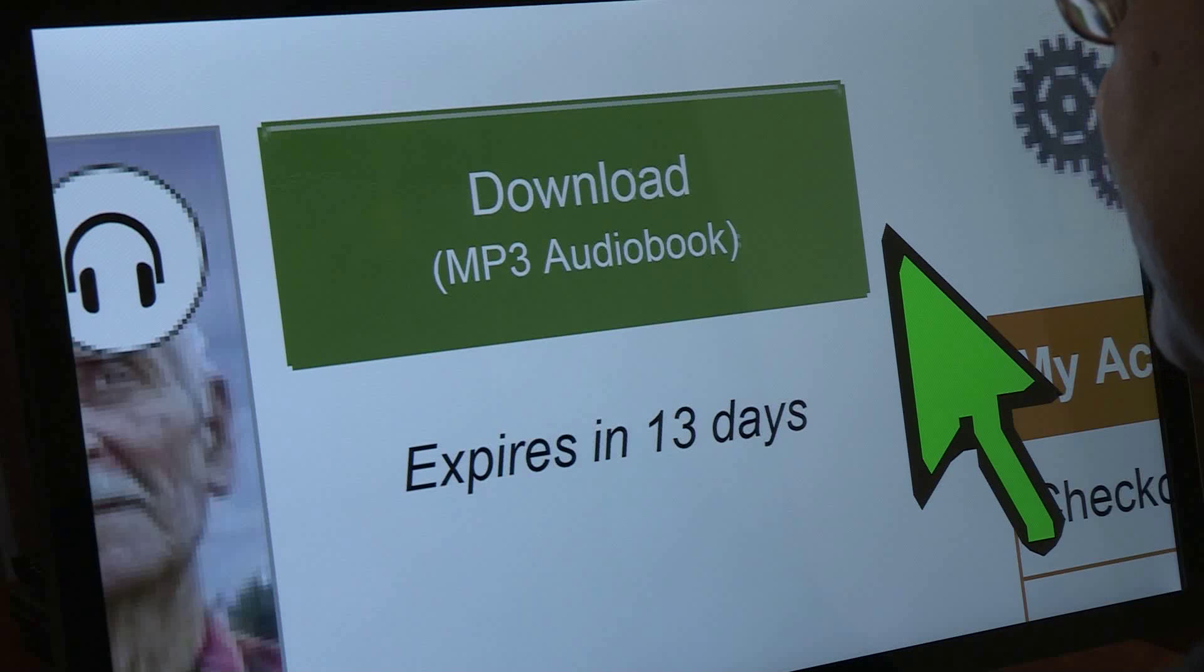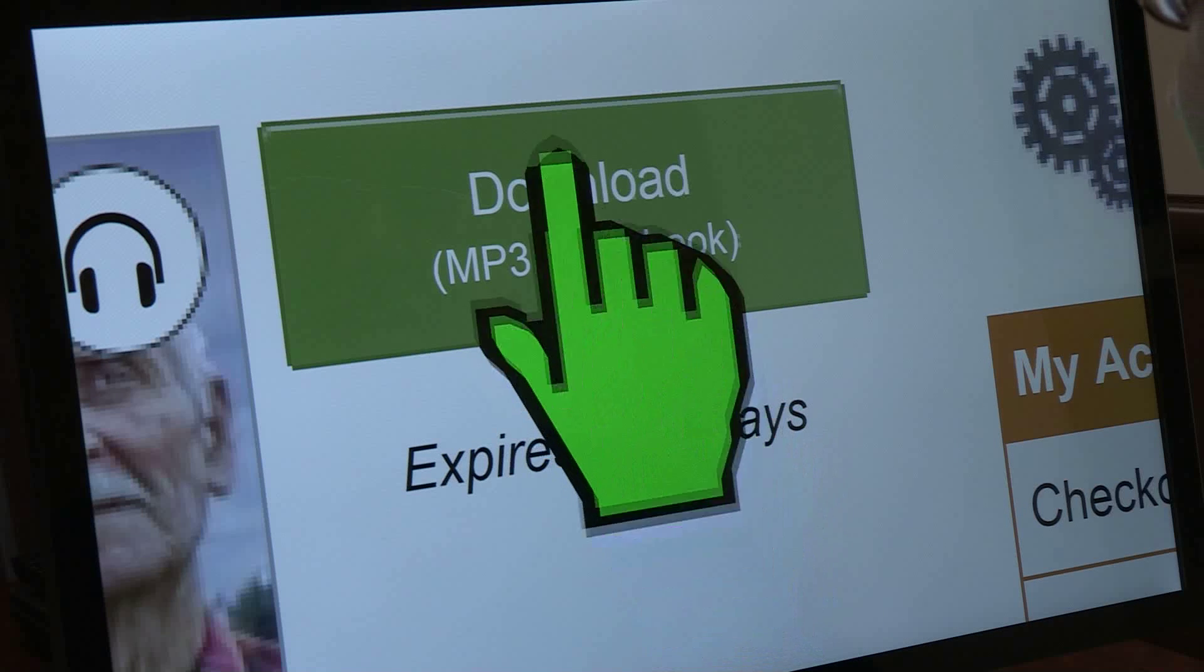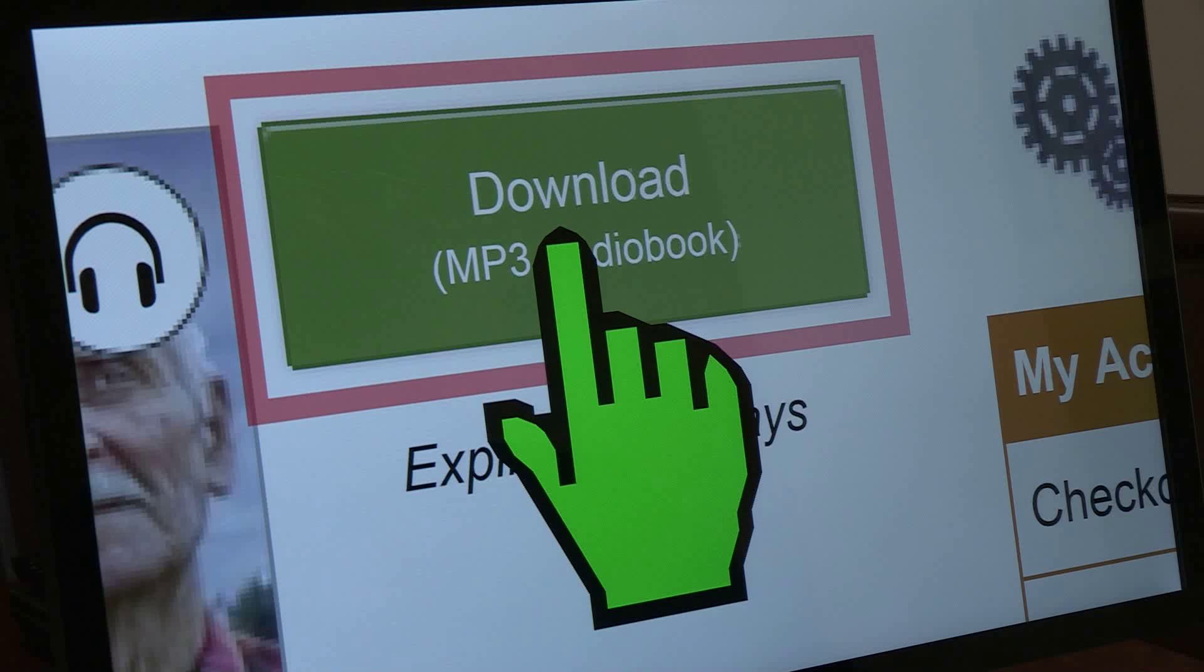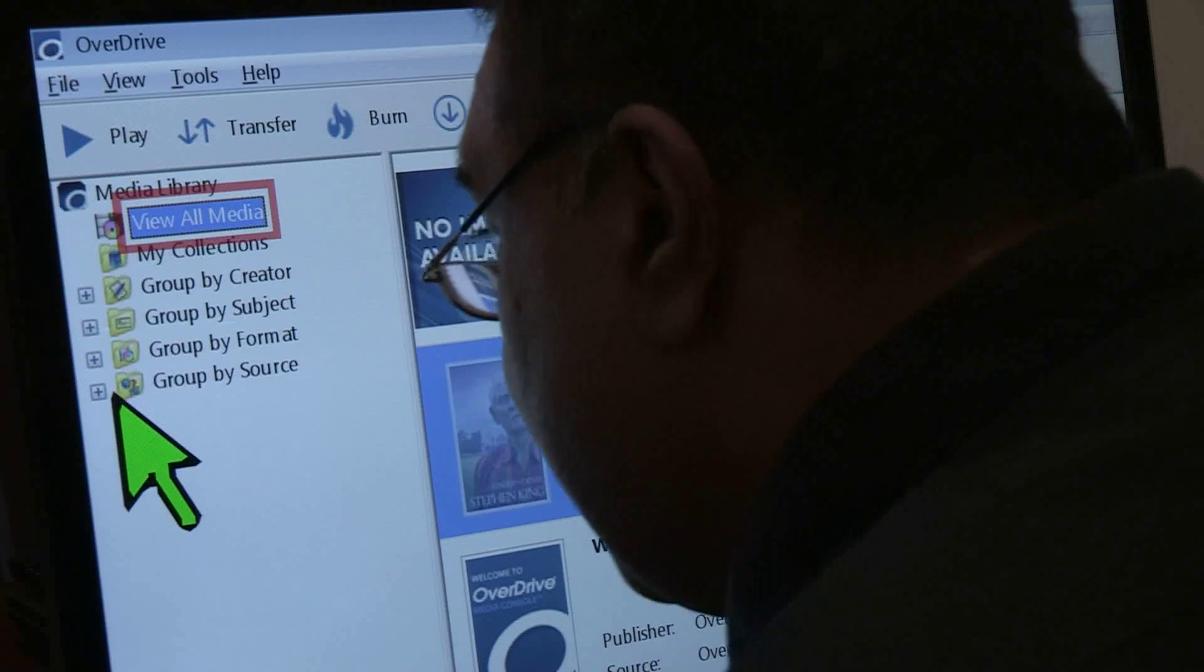Once you've borrowed the book, you need to download it to your computer. You click on download MP3 audiobook, and it will start downloading to your computer.